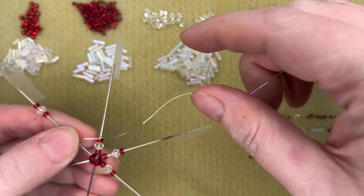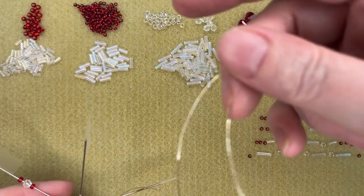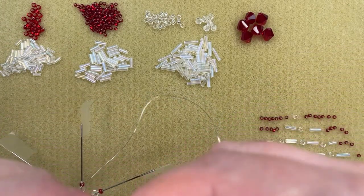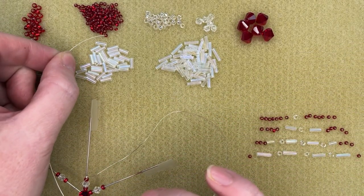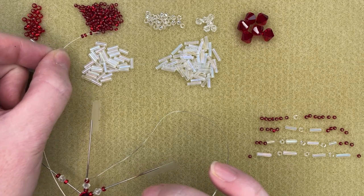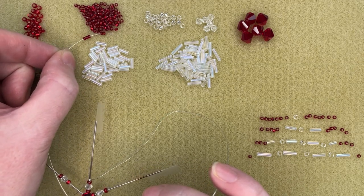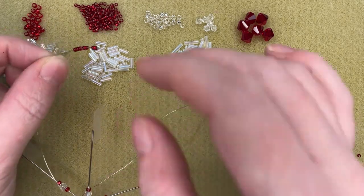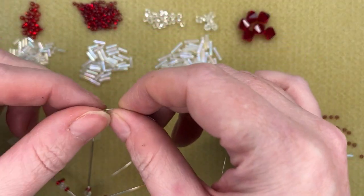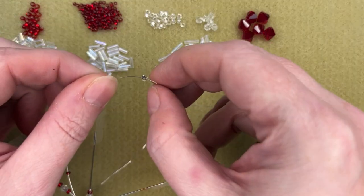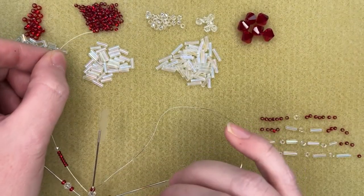All right, so now that I've got that I'm going to start with my first row of beads. So that row is seven of these size 10 seed beads, and then one of the size 8 crystal ones, and then seven more seed beads.